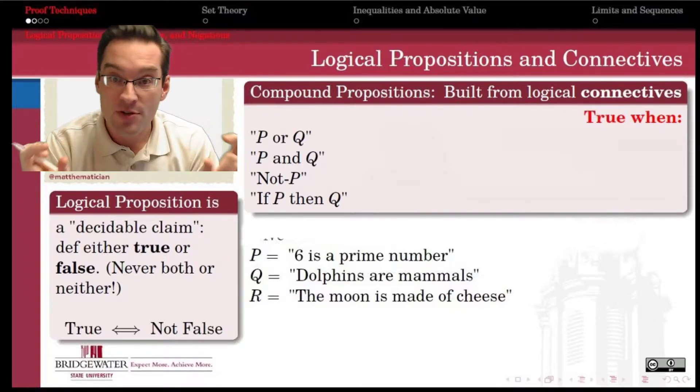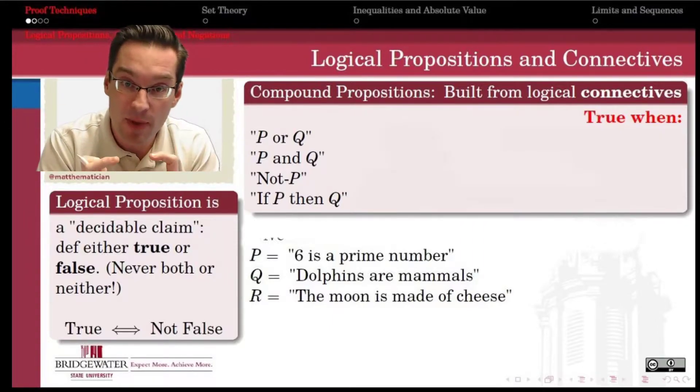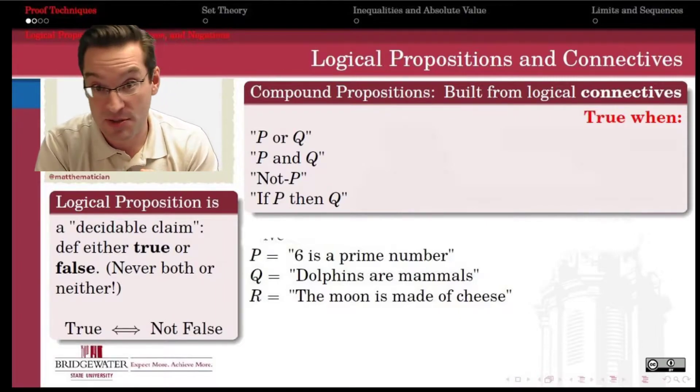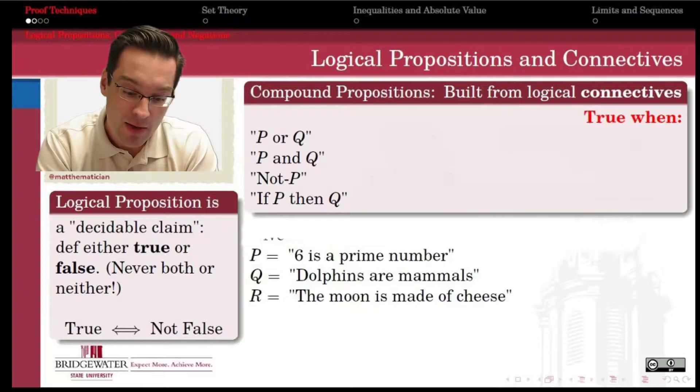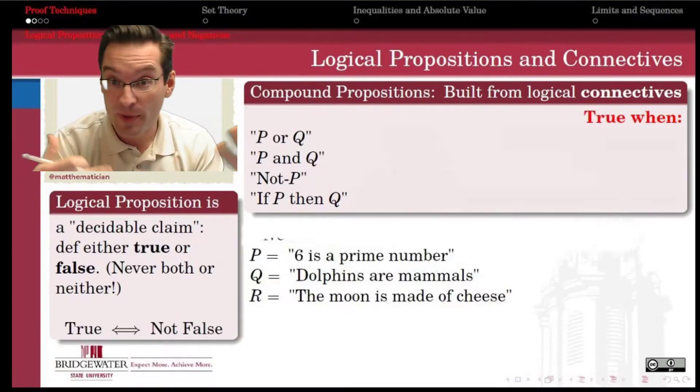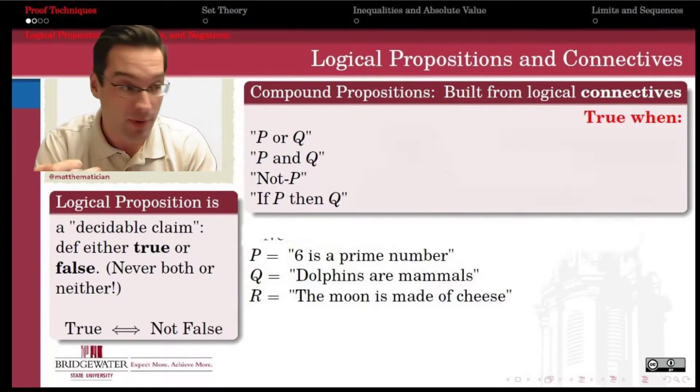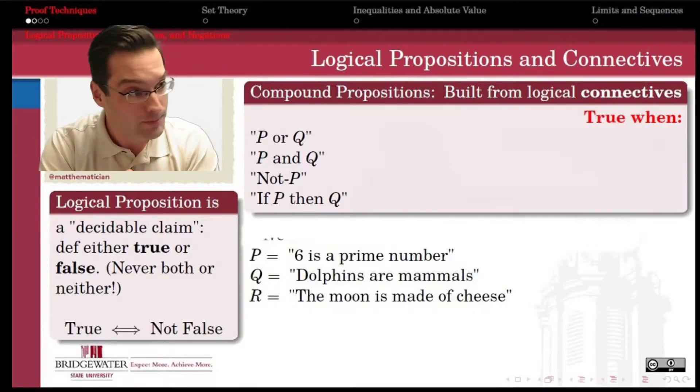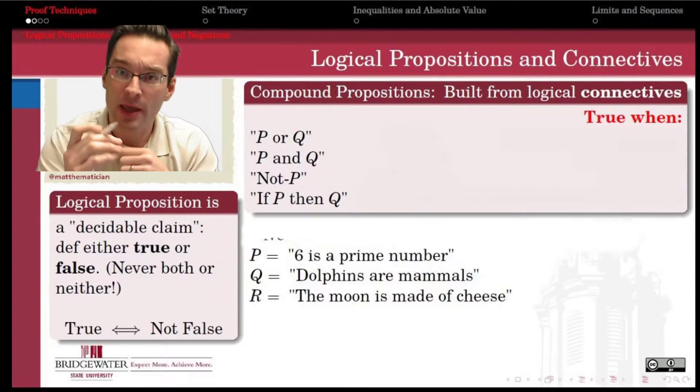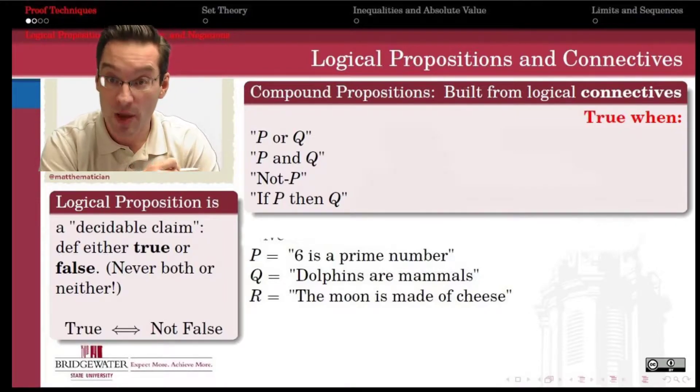Once we understand what propositions are, we can also stick them together to make more complex propositions. We use what are called logical connective operators. They're like the operators of addition, subtraction, multiplication, and division when we're working with numbers. They're just ways of making new propositions out of old ones. Here are the four that we care the most about in classical propositional logic.